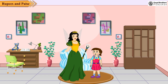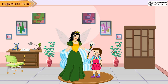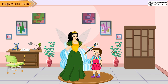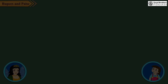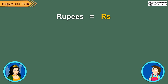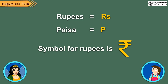We use money to buy things. Indian money is Rupees and Paise. It is in the form of notes and coins. In short, Rupees is written as RS and Paise as P. We also have a symbol to denote Rupee.